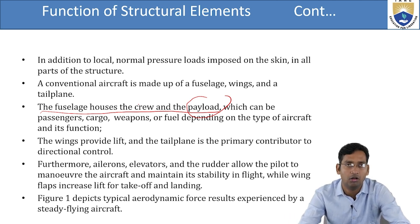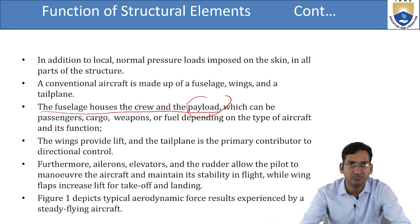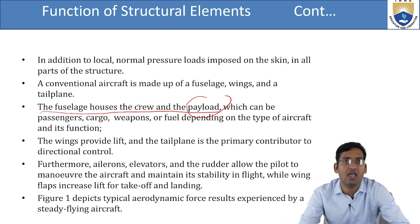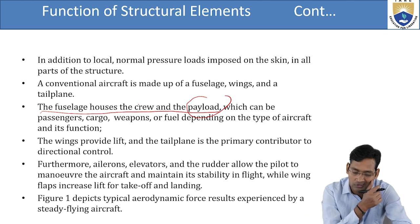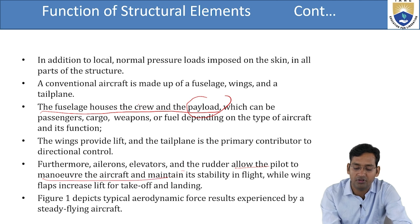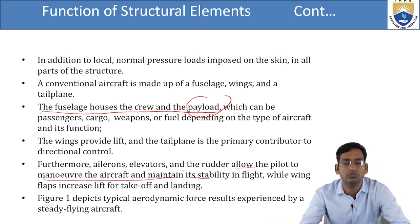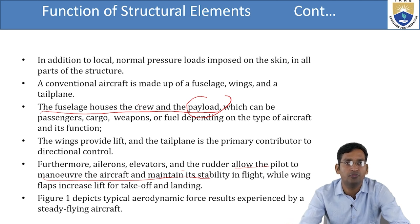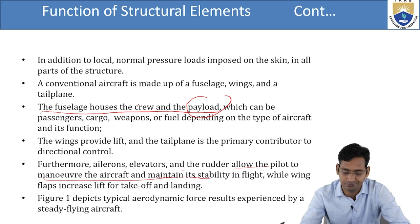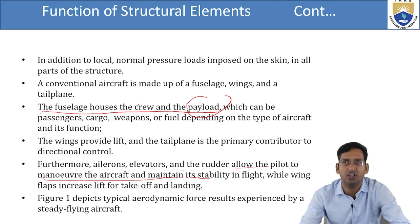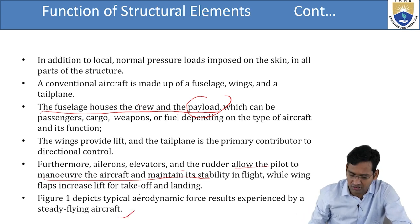The wings provide lift — as seen in the figure, both sides provide lift, making the aircraft move upward. The tail plane is the primary contributor to directional control — for moving left, right, or any direction. Ailerons, elevators, and the rudder allow pilots to maneuver the aircraft and maintain stability in flight, while wing flaps increase lift for takeoff and landing.